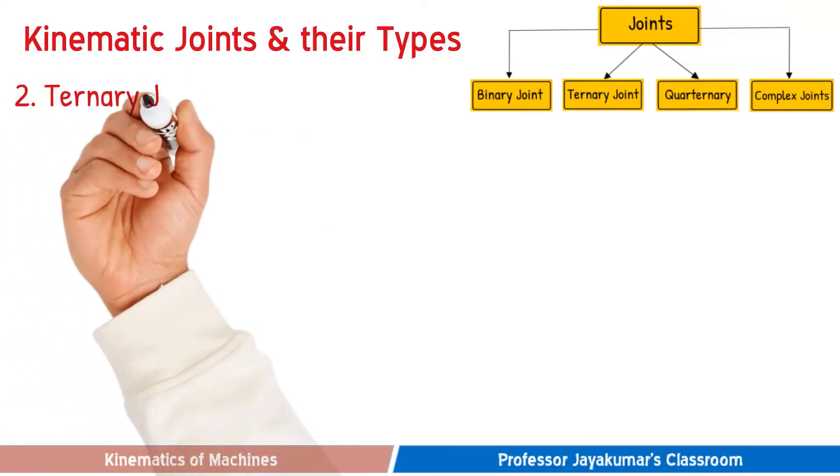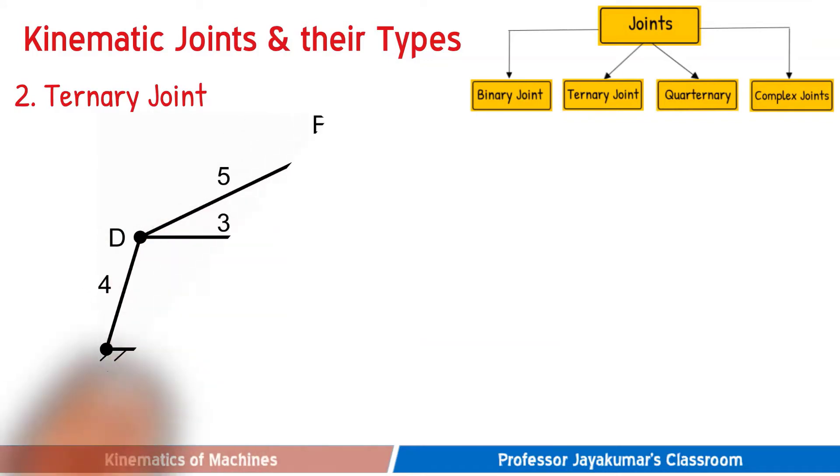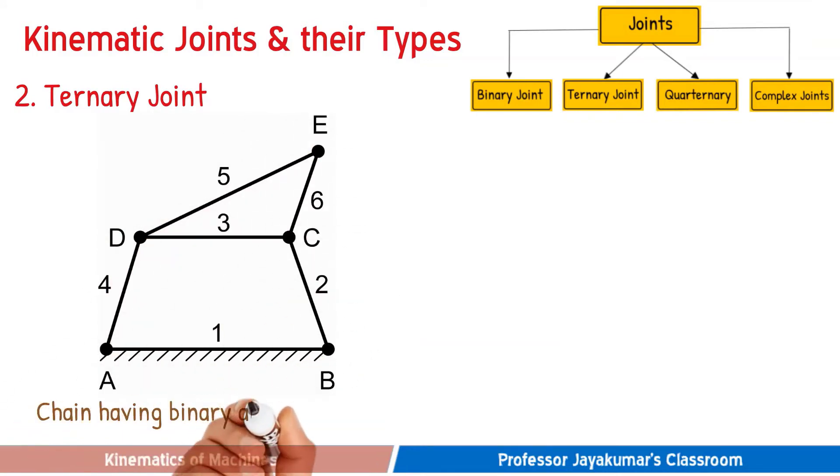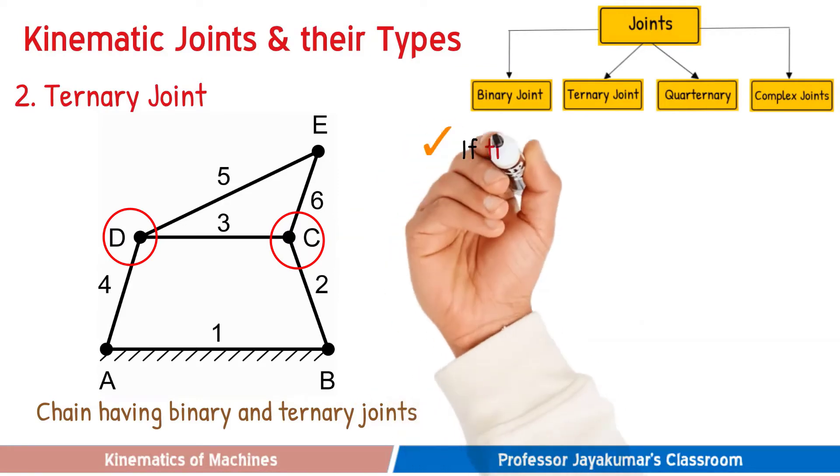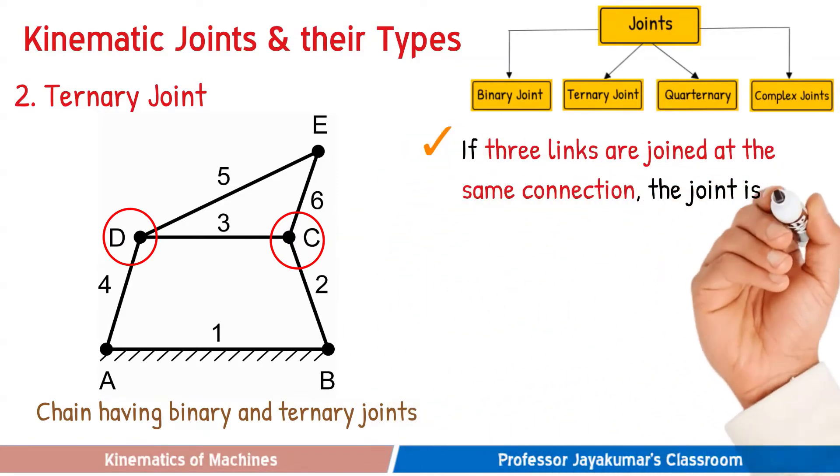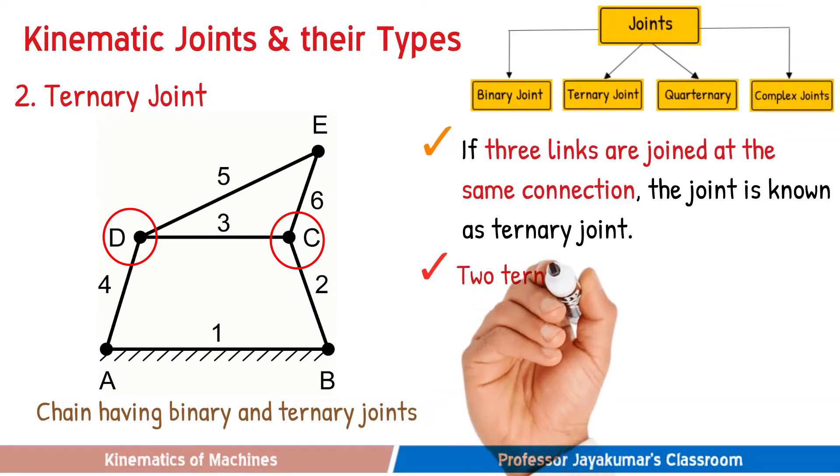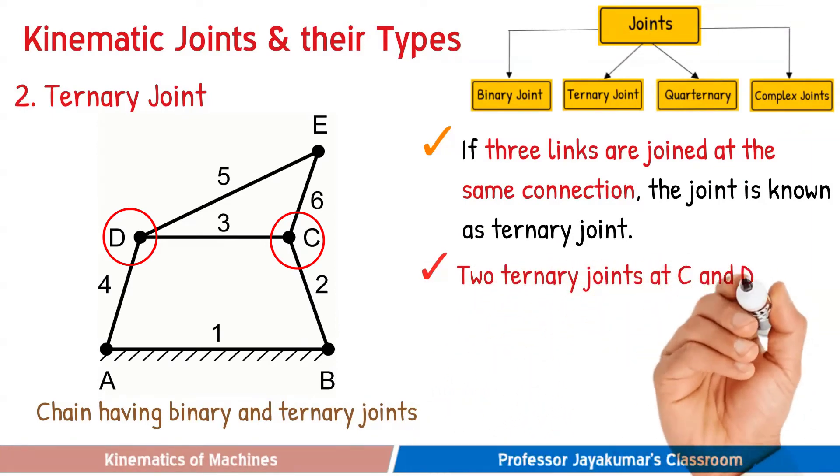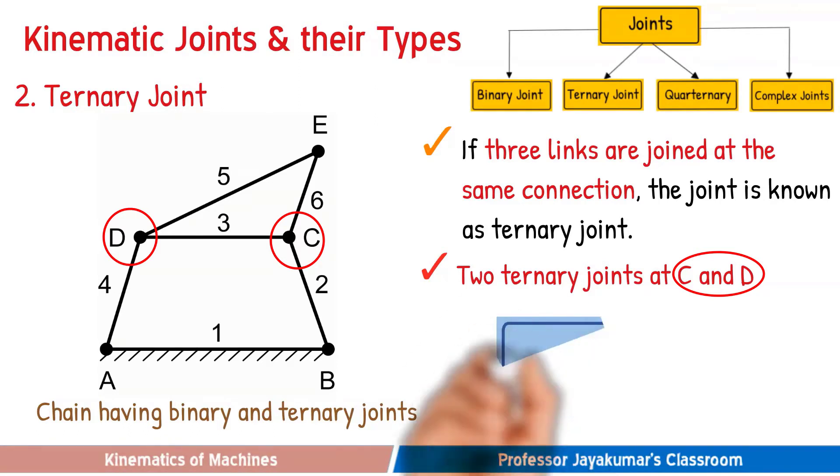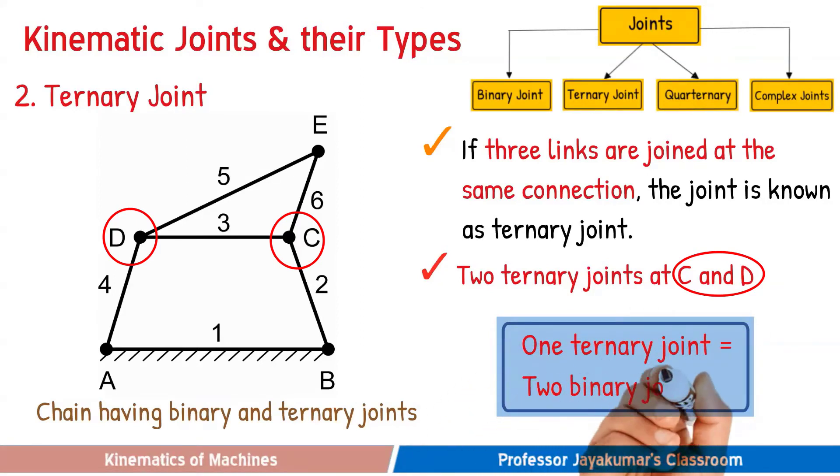The second type is a ternary joint. In the six link chain shown, we have two ternary joints at points C and D. If three links are joined at the same connection, then we can call that joint a ternary joint. It's always required to indicate ternary joint in terms of equivalent binary joints while solving a problem. So it can be proved that one ternary joint is equivalent to two binary joints.